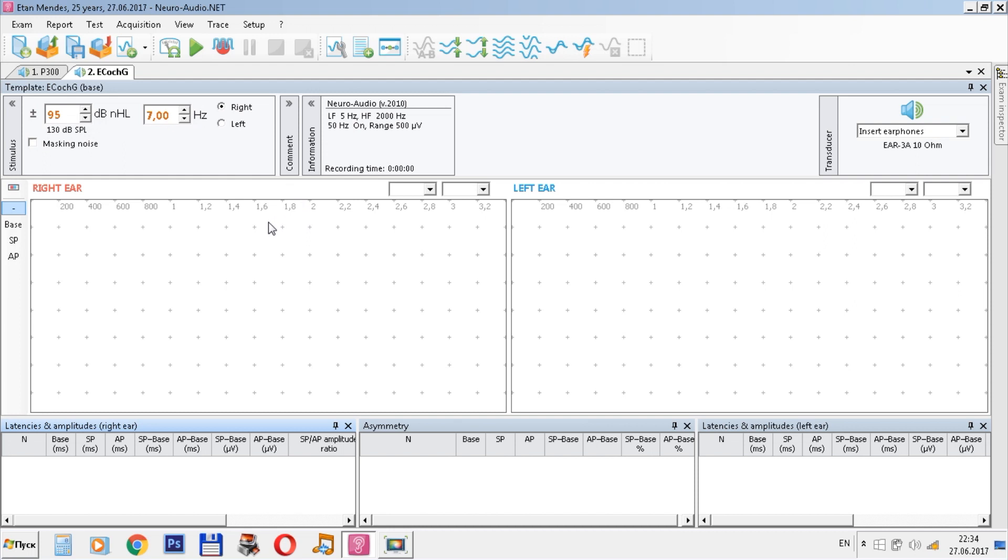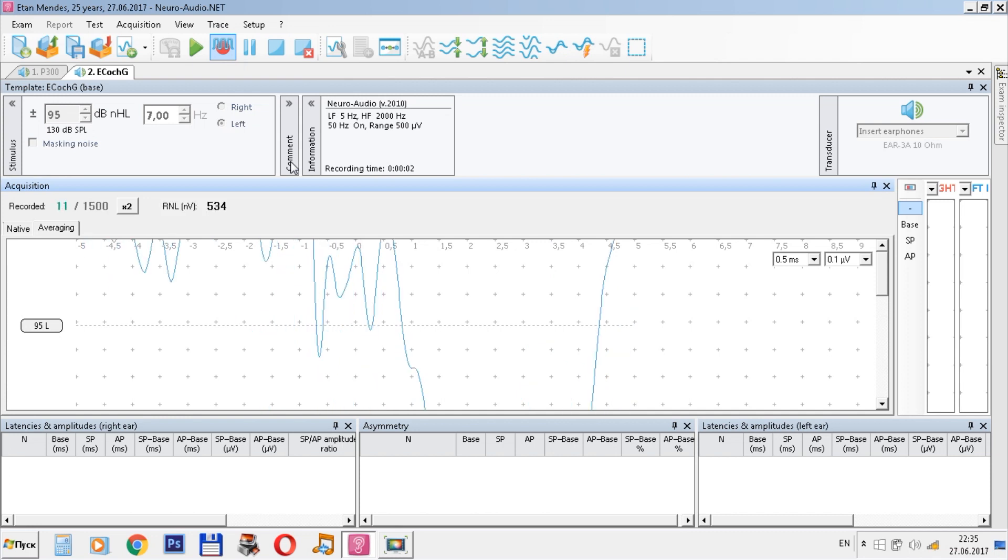Now we can choose the necessary side of stimulation. Check the impedance. Active is plus, it's OK. Check that you use insert earphones and start acquisition. You can see the process of stimulation and averaging. See the curve. Ask the patient to relax maximally and close their eyes.